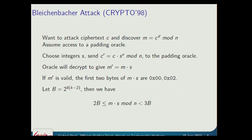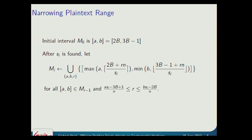We can see that we've learned something about M from this. Bleichenbacher's paper gives a nice formula: we take the interval we had previously and apply this formula. The intuition is we're multiplying M by some S, taking away R times N for some value of R — we've done modulo N, so we've taken away a certain integer number of Ns — and what's left is T, where T is between 2B and 3B. This R and S will come up again. We're multiplying by S and taking away R lots of N to leave something in the right range.